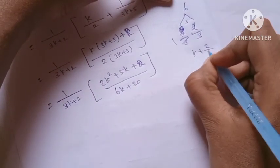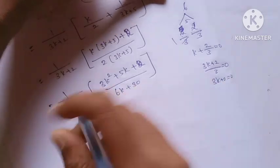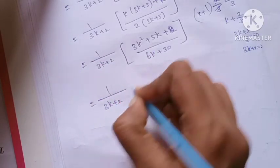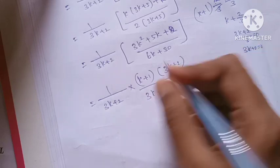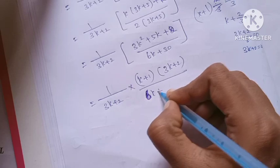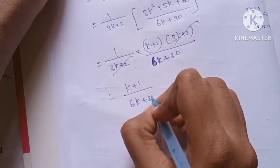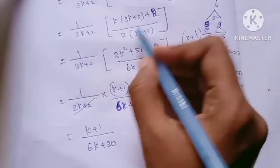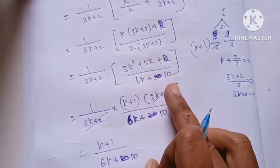Simplifying: 1 root is (k+1), with 1/((3k+2)(k+1)), giving (3k+2)·(3k+3) over (6k+10). The list simplifies to (k+1)/(6k+10), with factors 2·5 giving 10, confirming the result equals (k+1)/(6k+10).